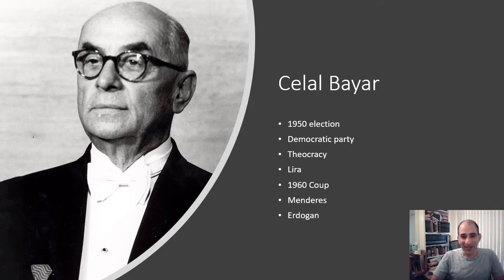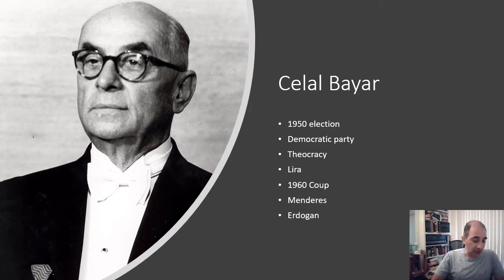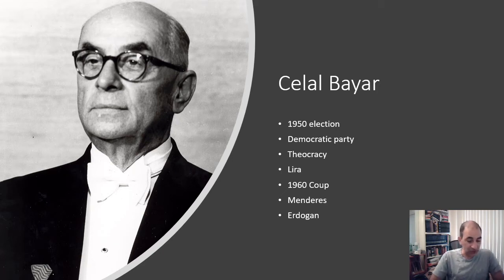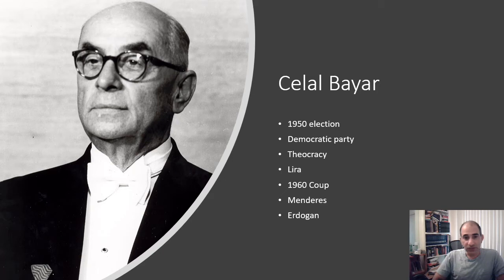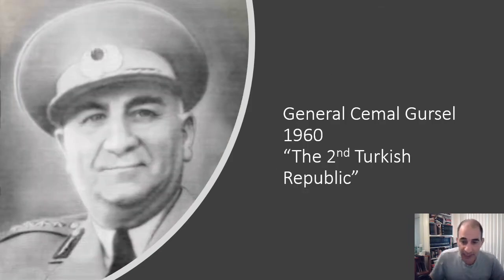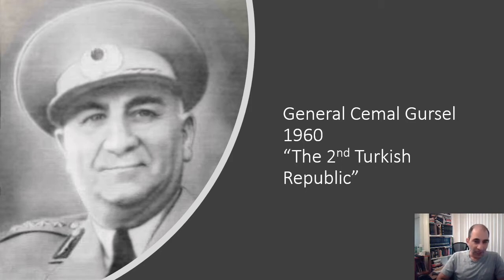There are quite a few attempted coups in Turkey. In 1960, there was a coup and Bayar was removed from power. His prime minister, Adnan Menderes, was actually hanged. It shifted back to secularism. We definitely see this kind of back and forth during this time. The person who initially replaced Bayar was General Gürsel in 1960.